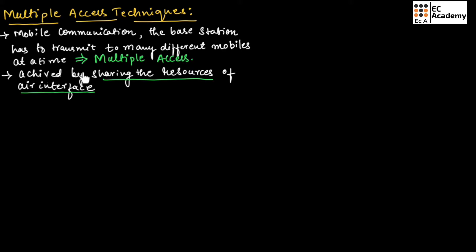The multiple access is achieved by sharing the resources that are available at the air interface. In mobile communication, air acts as the medium, so whatever resources are available in the air interface are shared to achieve the multiple access technique.